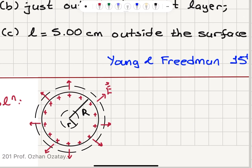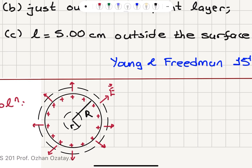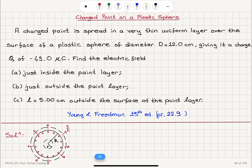Here we have the plastic sphere coated uniformly with a thin layer of paint, and we're going to consider two Gaussian surfaces, one inside and one outside with radius r — r less than capital R and r greater than capital R — to answer these questions. Because of this charge distribution, the electric field will be pointing radially outward from the paint, and the area vector and the electric field vector are parallel to each other.